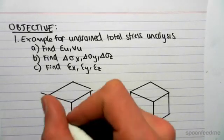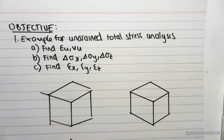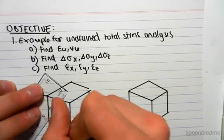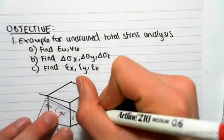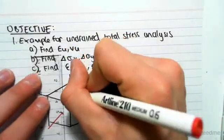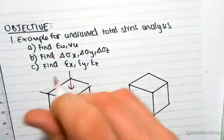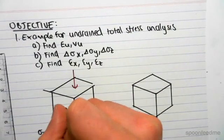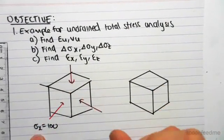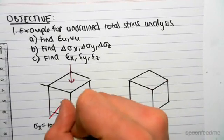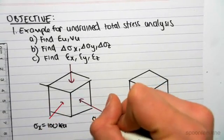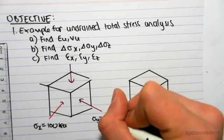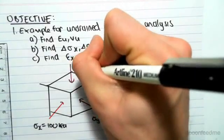So let's say we have a cube specimen of soil, this is in three dimensions, and we get initial stresses of sigma x equaling 100, this is in kPa, sigma y equaling 100, and we'll make sigma z equal 100 as well.